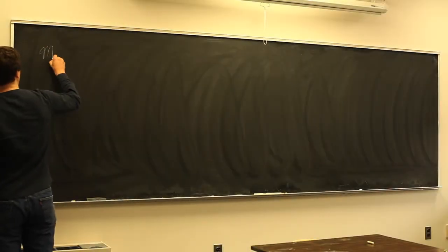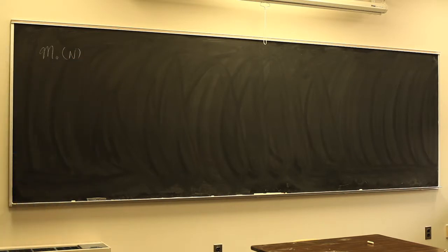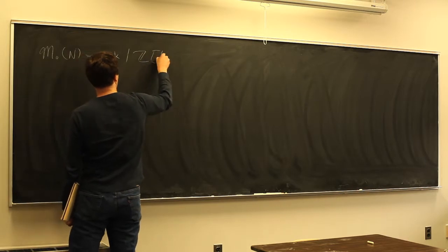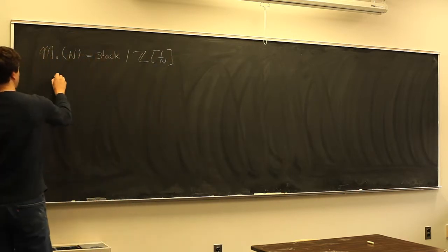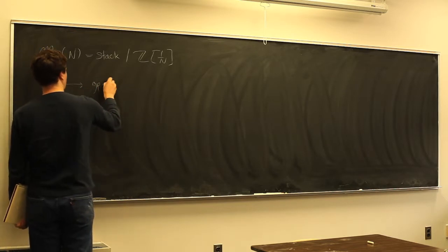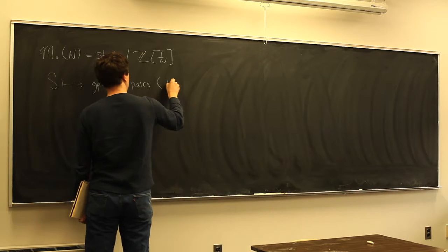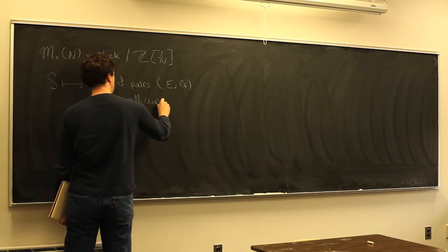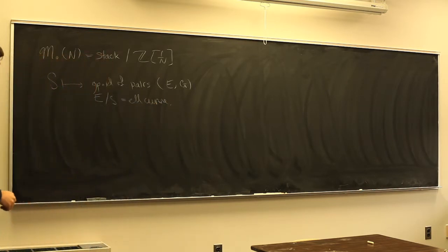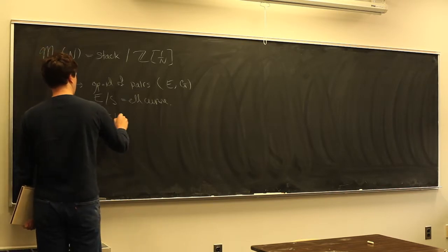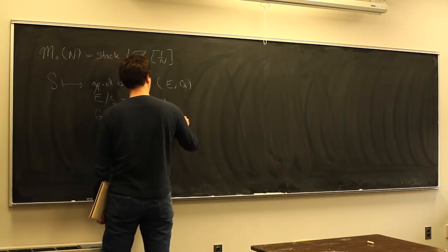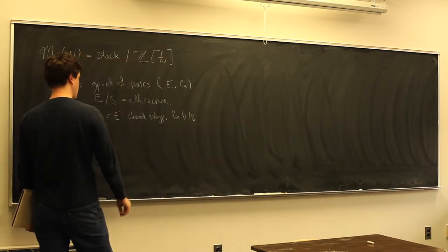Last time we were talking about this space — I called it Y₀(n) last time, but I'm going to switch notations and write this for the stack. So this is the stack over Z[1/n], which assigns to a scheme S the groupoid of pairs (E, G), where E over S is an elliptic curve and G is a Γ₀(n) structure on E — a closed subgroup which is finite and flat over S, and cyclic of order n in each fiber.